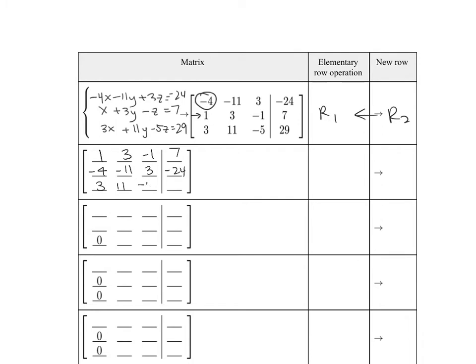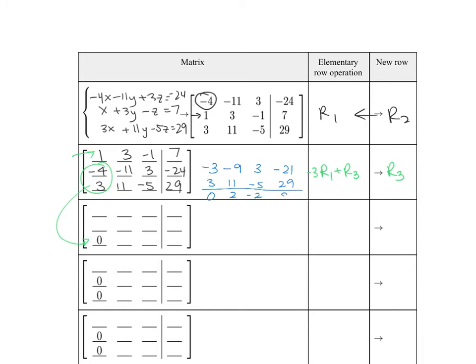Once we get our 1, we want to get 0s below it. Following the process, we need to make 3 go away in the third row. If we multiply the first row by negative 3 and add that to row 3, that makes the new row 3. That's negative 3, negative 9, positive 3, negative 21 added to 3, 11, negative 5, 29, giving us 0, 2, negative 2, and positive 8. So our new row 3 is 0, 2, negative 2, positive 8, and the other rows stay the same.